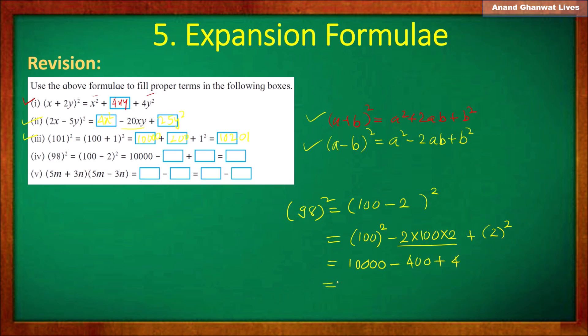Now perform the operations. By the BODMAS rule we apply subtraction and addition from left to right: first, 10,000 − 400 = 9,600; and then 9,600 + 4 = 9,604.